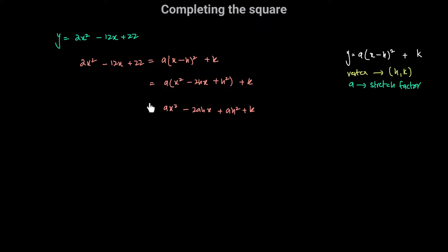Since this is an equality, the left-hand side must equal the right-hand side. For the coefficients of x squared to match, the coefficient on the left-hand side is 2, and on the right-hand side a is the coefficient of x squared, so therefore a is equal to 2.